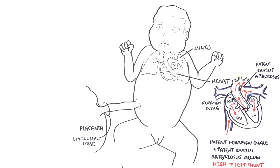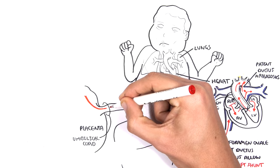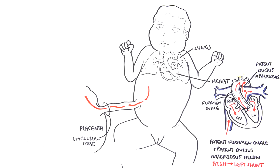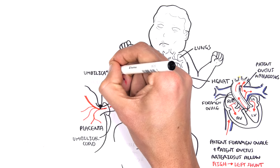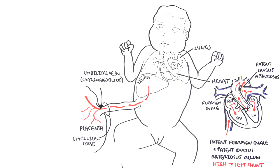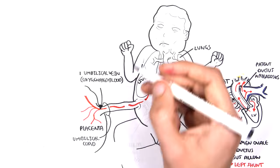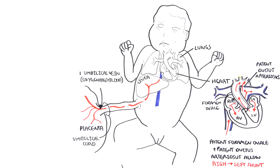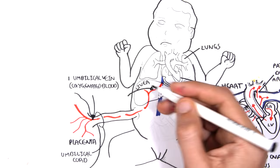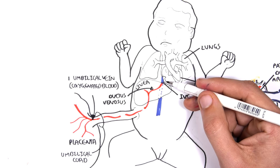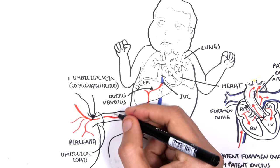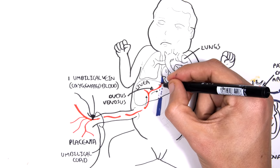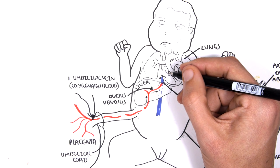The umbilical cord is not just a cord — it actually contains veins and arteries. The umbilical vein, here drawn in red, travels from the placenta to the fetal liver. There is one umbilical vein, and it is drawn in red because it contains oxygenated blood delivered from the mother. It's called the umbilical vein because veins travel back to the heart. The umbilical vein travels to the fetal liver and becomes the ductus venosus, which then joins with the inferior vena cava — here drawn in blue — which contains deoxygenated blood from the fetal circulation.